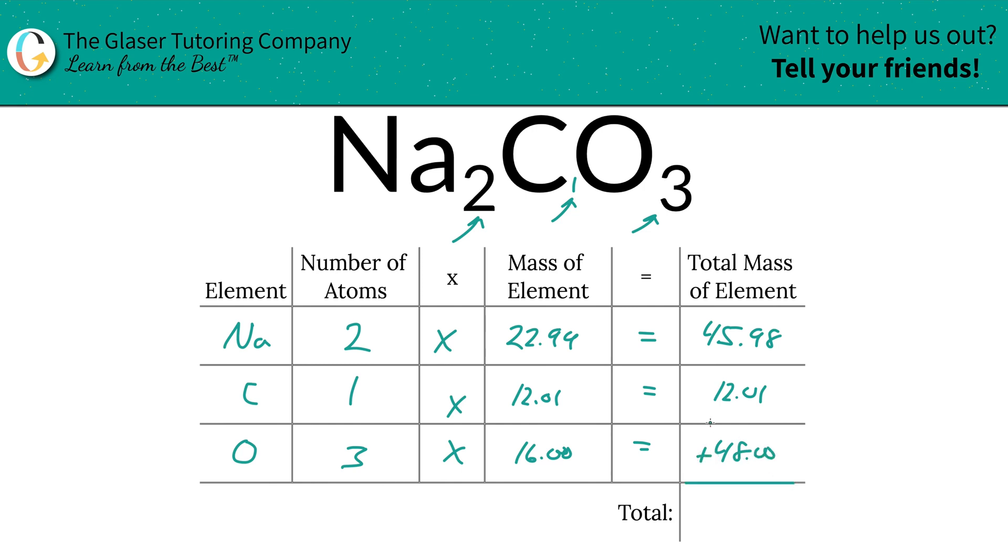And then to find the total mass of the entire compound, just simply add up all of these total masses of each element. So it's going to be 105.99.